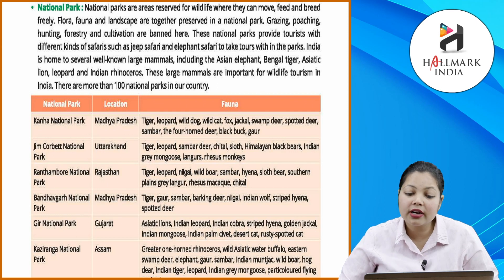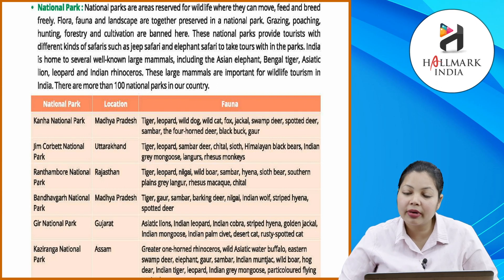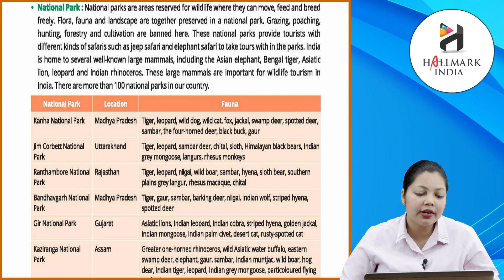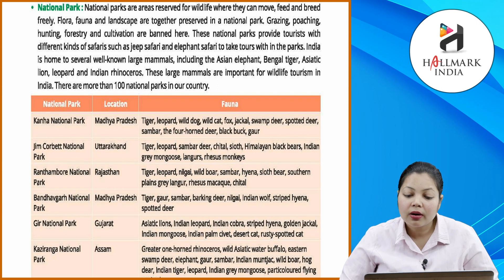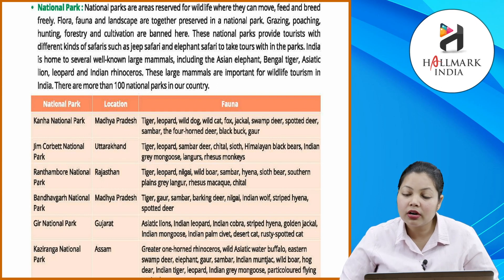Periyar National Park, Kerala — tiger, elephant, white tiger, gaur, sambar, Indian giant squirrel, flying squirrel, sloth bear, lion-tailed macaque. Keoladeo Ghana National Park (also called Bharatpur Bird Sanctuary), Rajasthan — migratory waterfowl, Siberian crane, warblers, babblers, bee eaters, bulbuls, buntings, partridges, quails; other animals include nilgai, feral cattle, cheetah, sambar, wild boar, Indian porcupine.